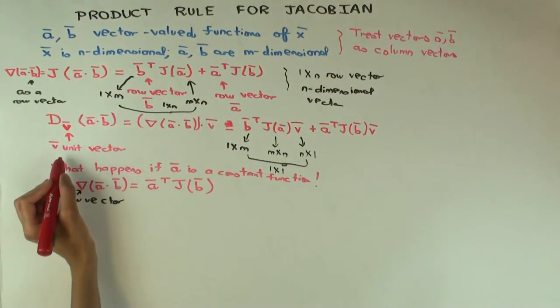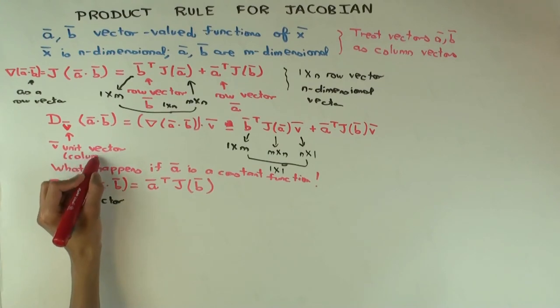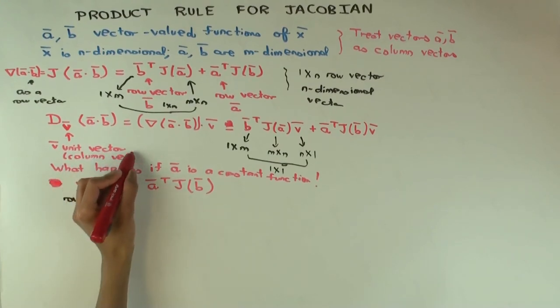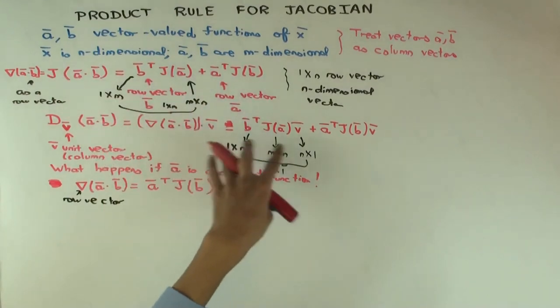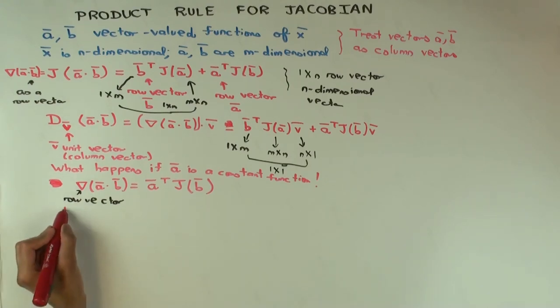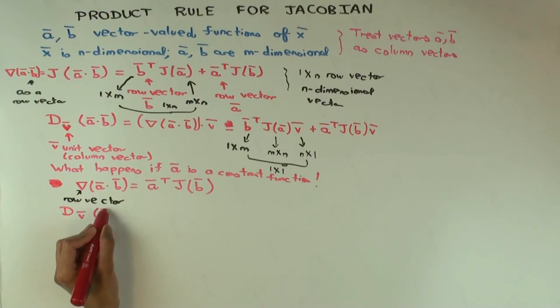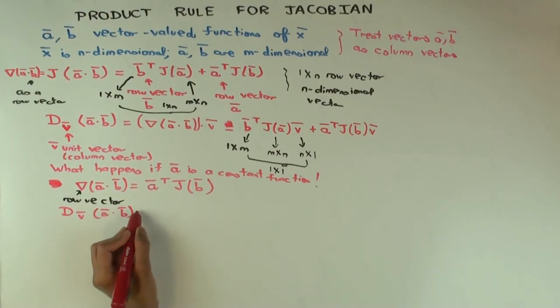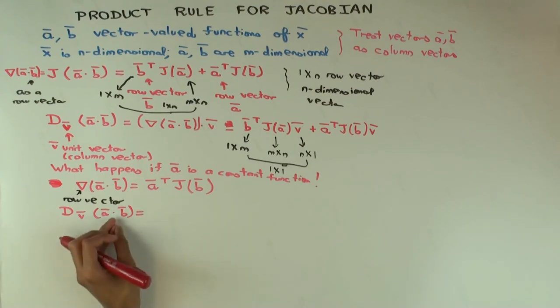I guess I should be clearer here. Treat vectors a, b as column vectors. And the v is also treated as a column vector. But the intermediate gradient vector that I'm storing, I'm storing it as a row vector just to make it easier here. You could clean that up more if you want, but that's fine for our purpose.